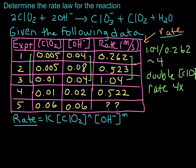That gives us enough information to figure out the order. We have 2 times the concentration to some power N equal to 4 times the rate. The only value that makes this equality true is N = 2, because 2 raised to the second power equals 4. So when we double the concentration of chlorine dioxide, the reaction rate goes up by 4, and this reaction is second order in chlorine dioxide.